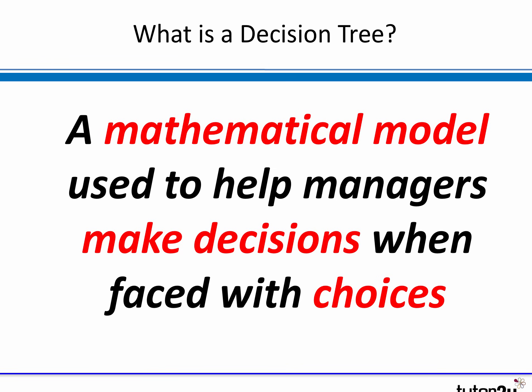So a decision tree — what is it? Well, it's a mathematical model. It involves doing some calculations, but essentially its purpose is to help managers make decisions, in particular where there is uncertainty as to the outcomes of those decisions, but also perhaps where they're faced with a choice — which is the best choice to make, or is it better to take no action?